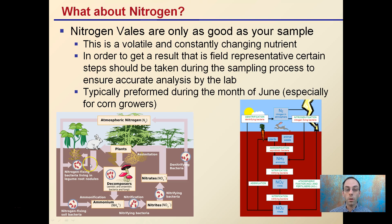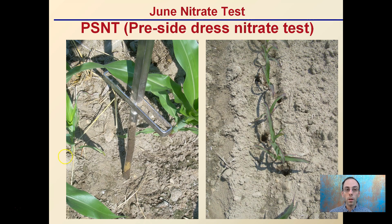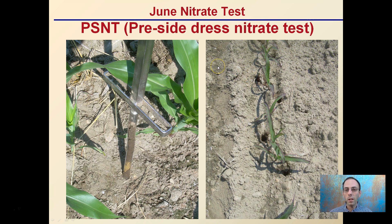Because nitrogen is always changing, if you test early in the season when soils are cold, you'll get an artificially low value. So this PSNT — or pre-sidedress nitrate test — taken in June, you want to take a full one-foot core. Here with corn, for example, you go right through, sampling in a zigzag form along the row, taking those six to nine samples or so.